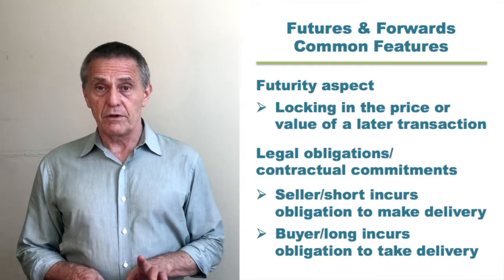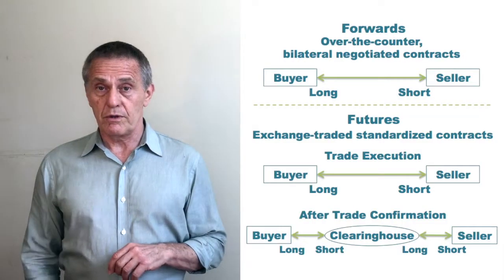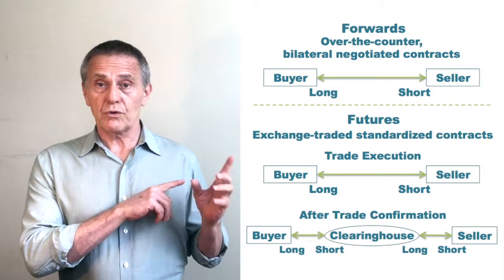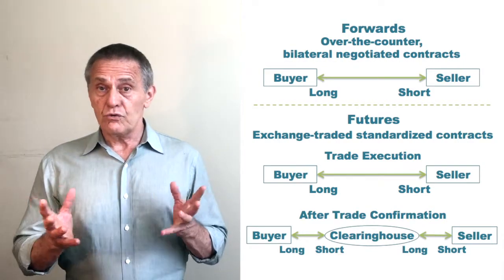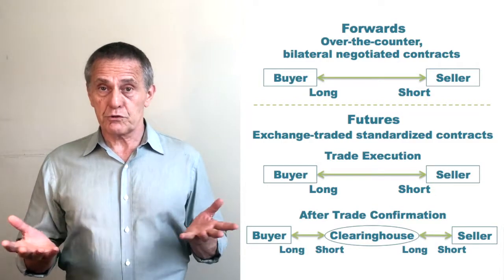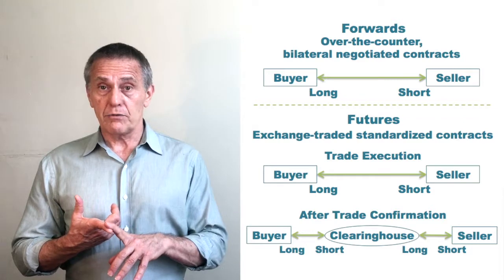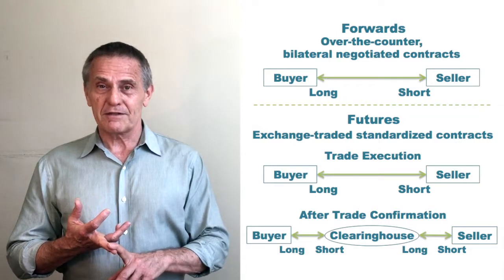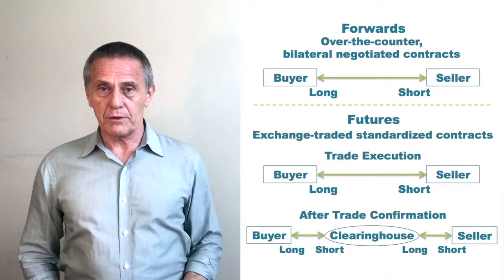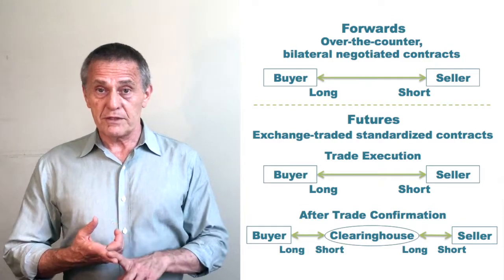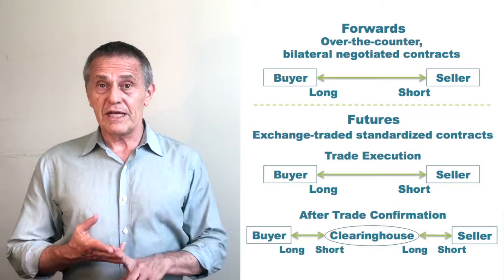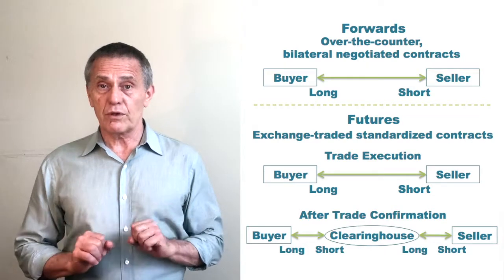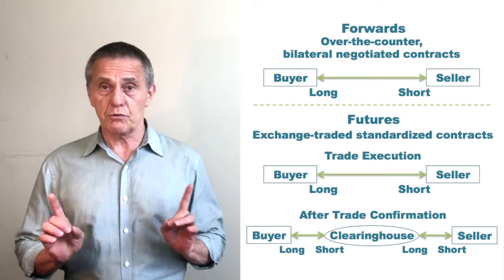Then how do they differ? Consider the diagrams. Forward contracts are over-the-counter bilateral contracts with two counterparties — the long and the short, the buyer and seller — and the two negotiate all aspects of their contractual relationship: the related security, commodity, or instrument; the price; the mechanism for delivery; the date of delivery; the size of the contract; and the number of units. Buyer and seller of a forward contract negotiate all aspects of their contractual relationship between one another.